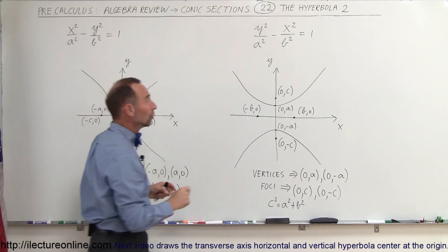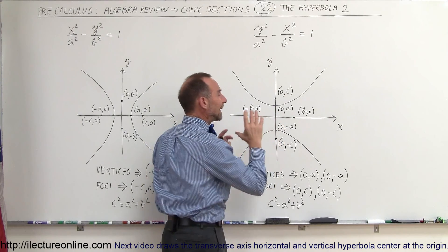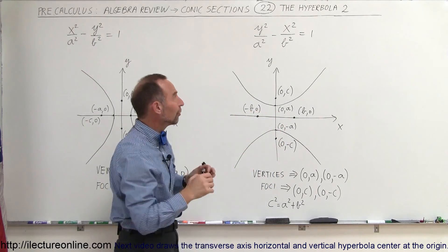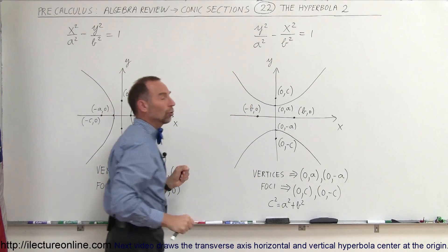Over here, the vertex is defined by 0, A and 0, minus A. So the A is always associated with the vertex, and that's why here it's underneath the x squared term and there it's underneath the y squared term.